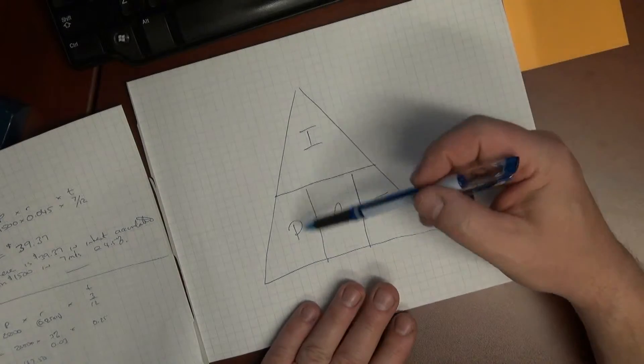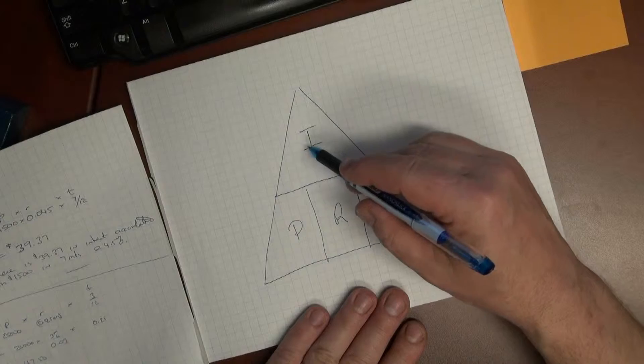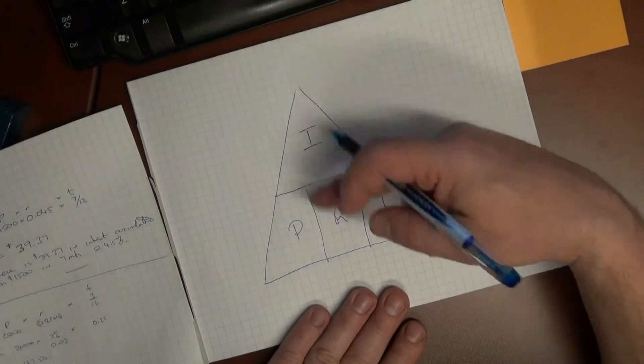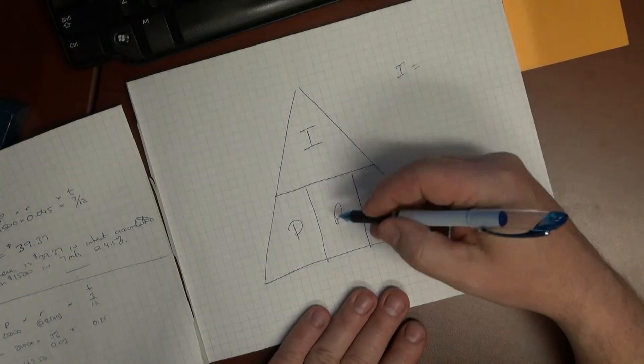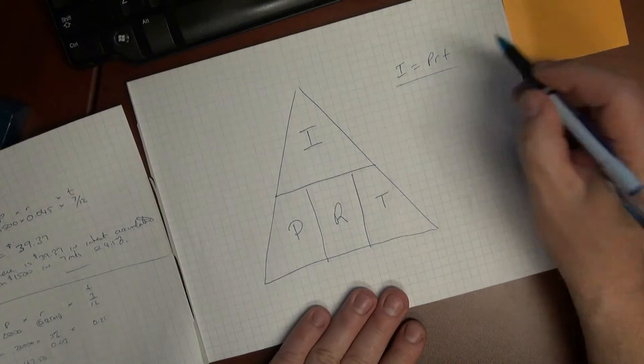So given any of those, the way this works is that the one you're looking to find - we multiply things that are on the same level and divide things that are on a different level. So if we're looking for I, for example, the formula is PRT, as we've seen in the base formula.